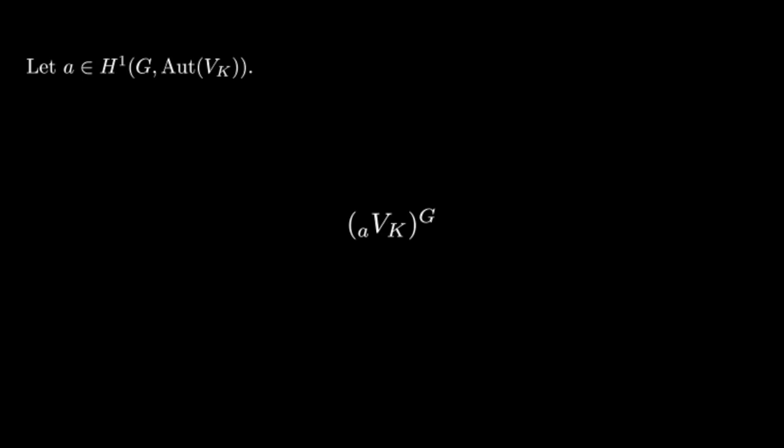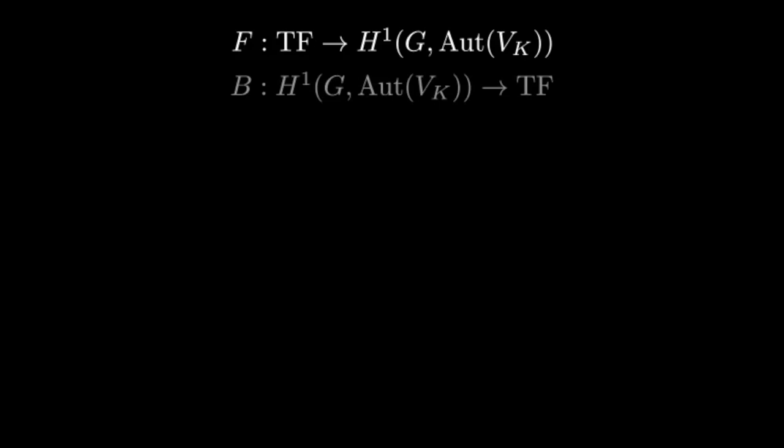By Galois descent, we can get an F-vector space by taking the fixed field. By the properties above, we have that this a_V_K fixed by G tensored with K is isomorphic to V_K. Furthermore, a_V_K and V_K have the same underlying vector space, so they're already isomorphic as vector spaces.